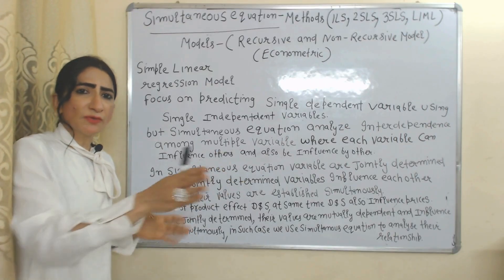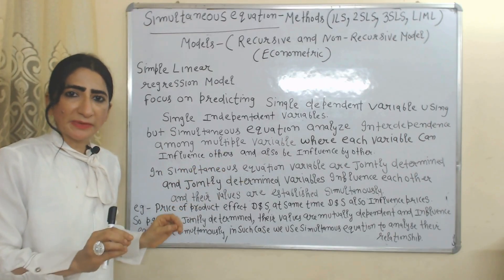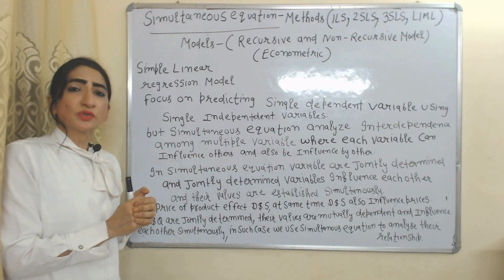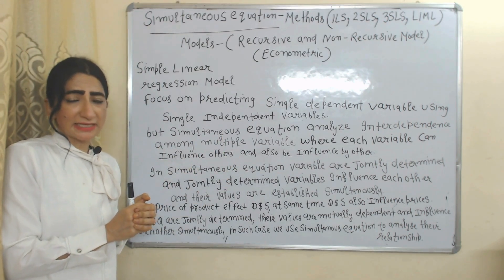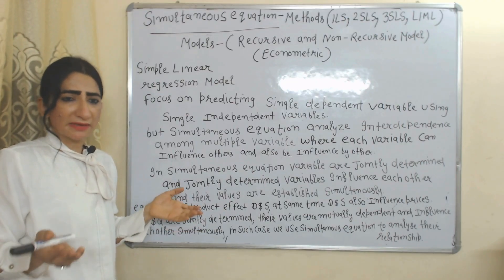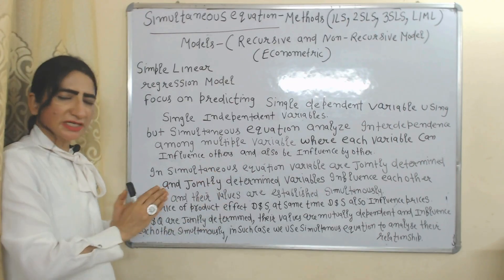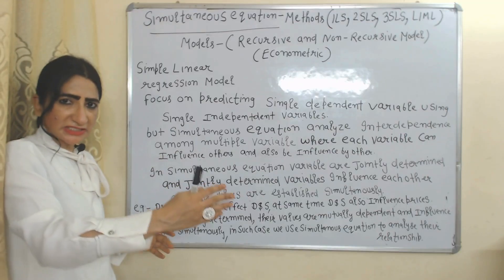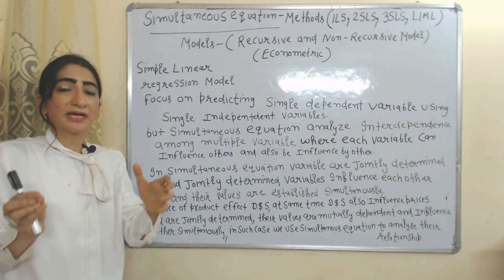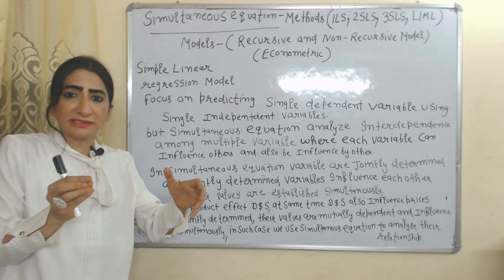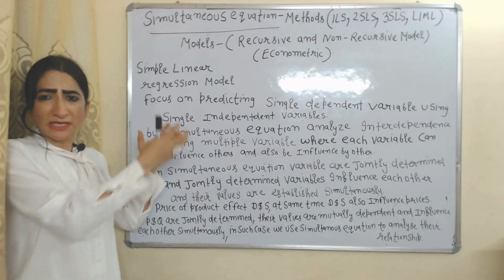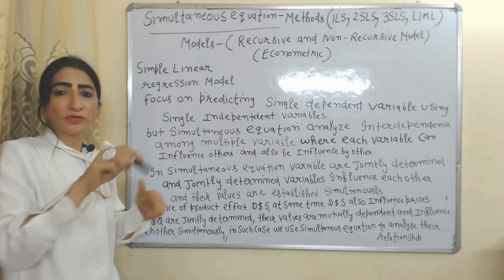For example, price influences demand and supply, and at the same time demand and supply also influence price. So prices and quantities are jointly determined — their values are mutually dependent on each other because their values are simultaneously established. In such cases, we use simultaneous equations to analyze the relationship among them.